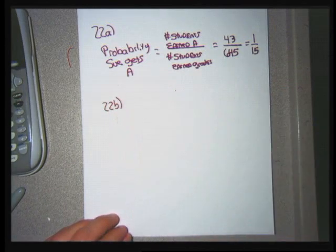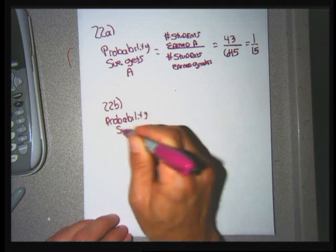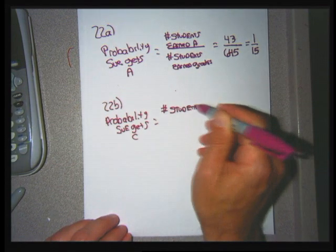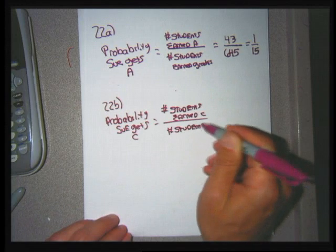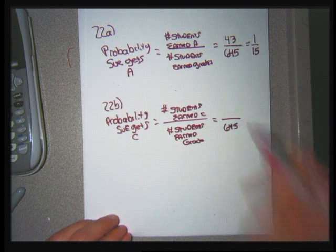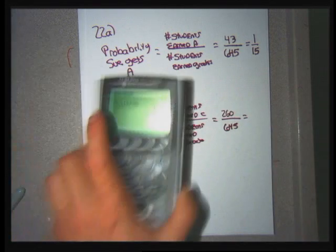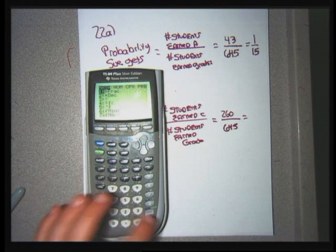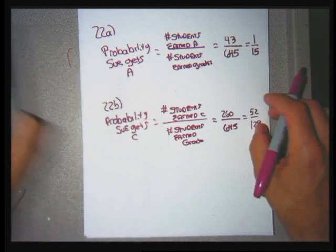For part B, the probability she gets a C: the numerator is the number of students who earned a C in his college algebra class (260), divided by the total of 645 students. Doing 260 divided by 645 on the calculator, then math, enter, enter — the fraction reduces to 52 over 129. So there's about a 40% chance that if Sue takes this class, she gets a C.